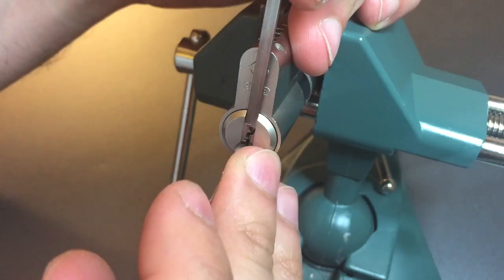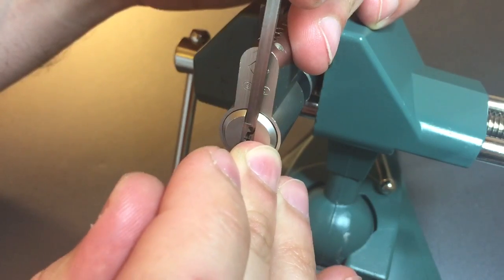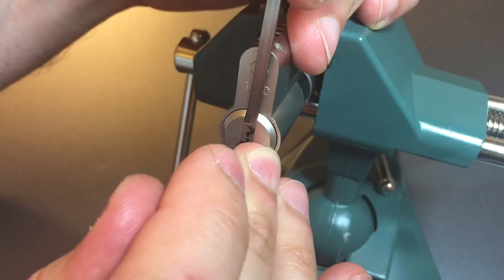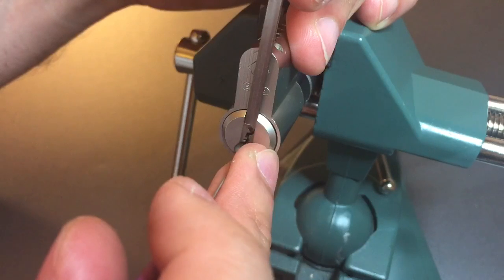One's loose, two's loose, three is loose, four is loose. Five is binding, got a click out of him. Six is binding, got a click out of him. Back to the beginning.